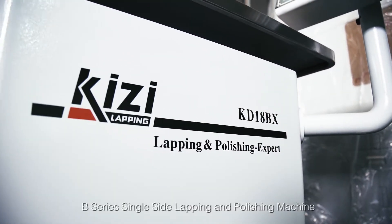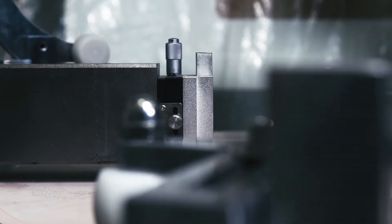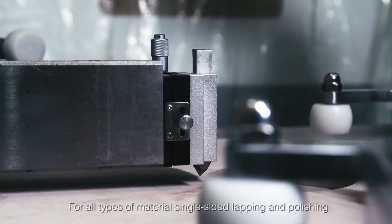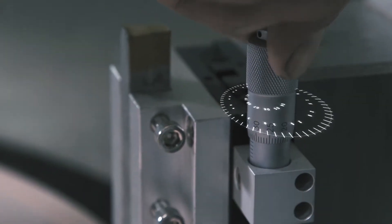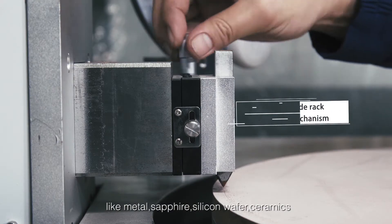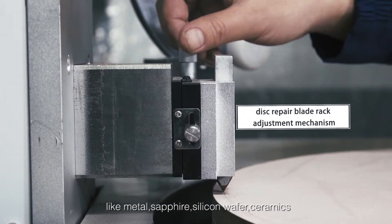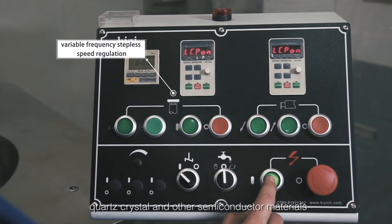B-Series Single-Side Lapping and Polishing Machine. For all types of material single-sided lapping and polishing, like metal, sapphire, silicon wafer, ceramics, quartz crystal, and other semiconductor materials.